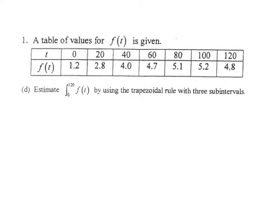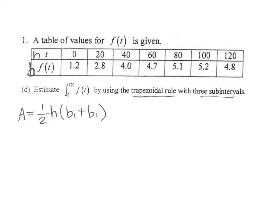For the last type of sum, we discuss the trapezoidal rule with three subintervals. A quick review: the trapezoid area formula, very important to remember, is one-half times the height times the sum of the bases. Our height values come from the x values and our base values come from the y values.